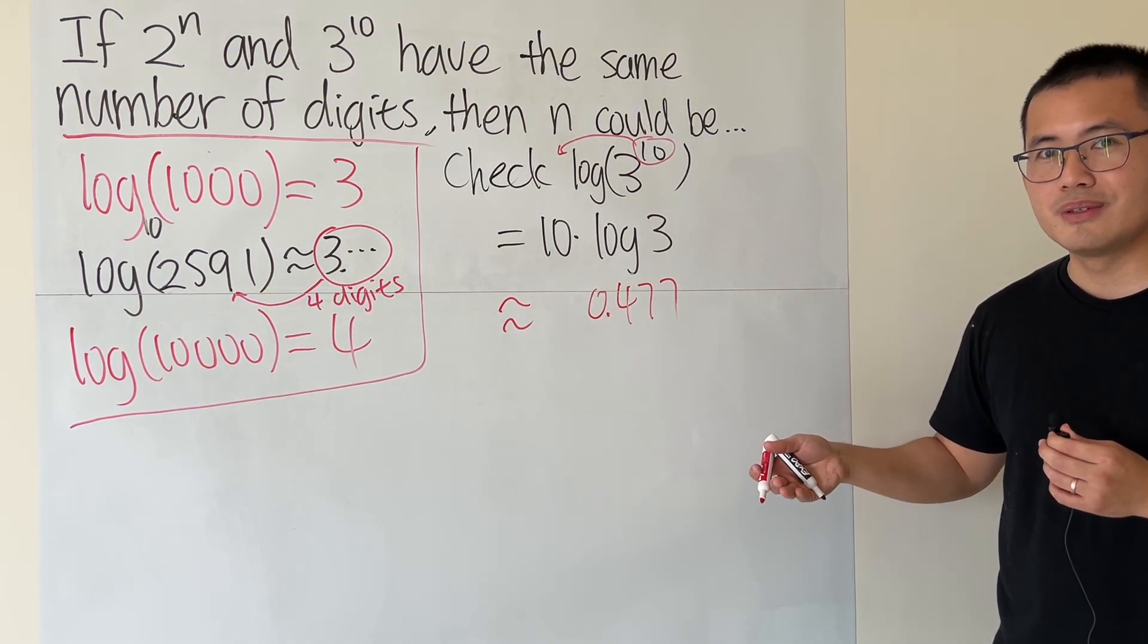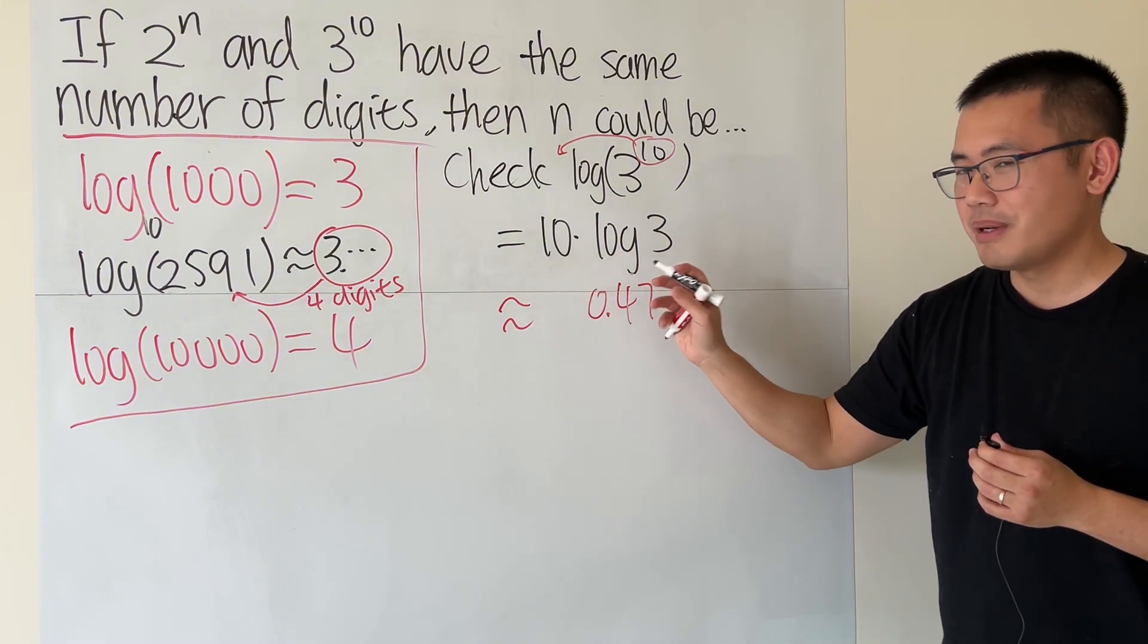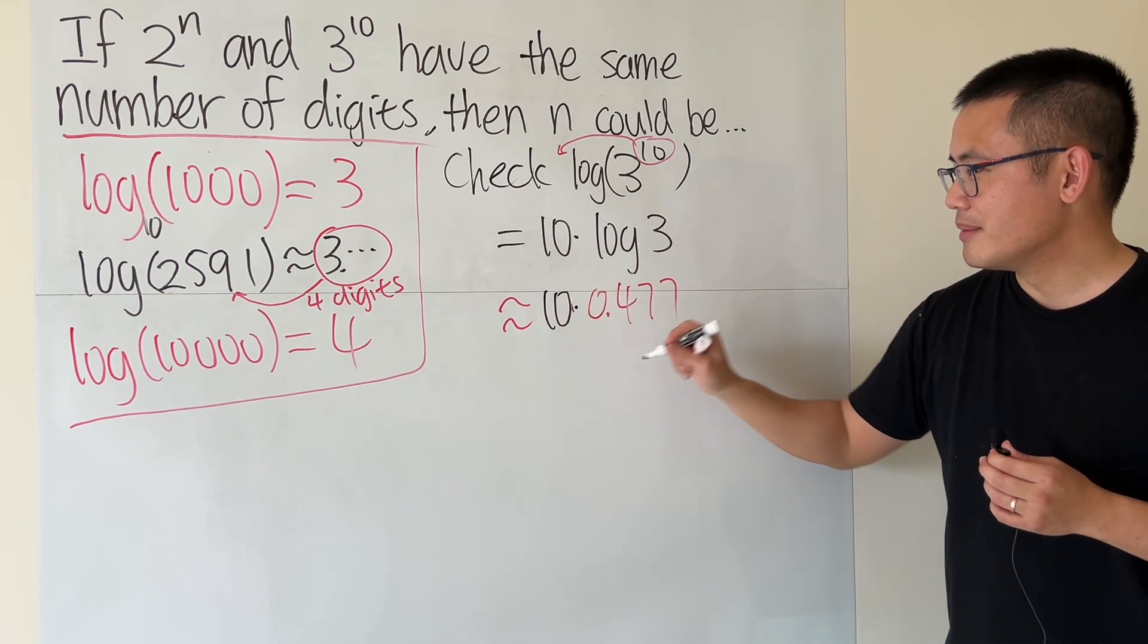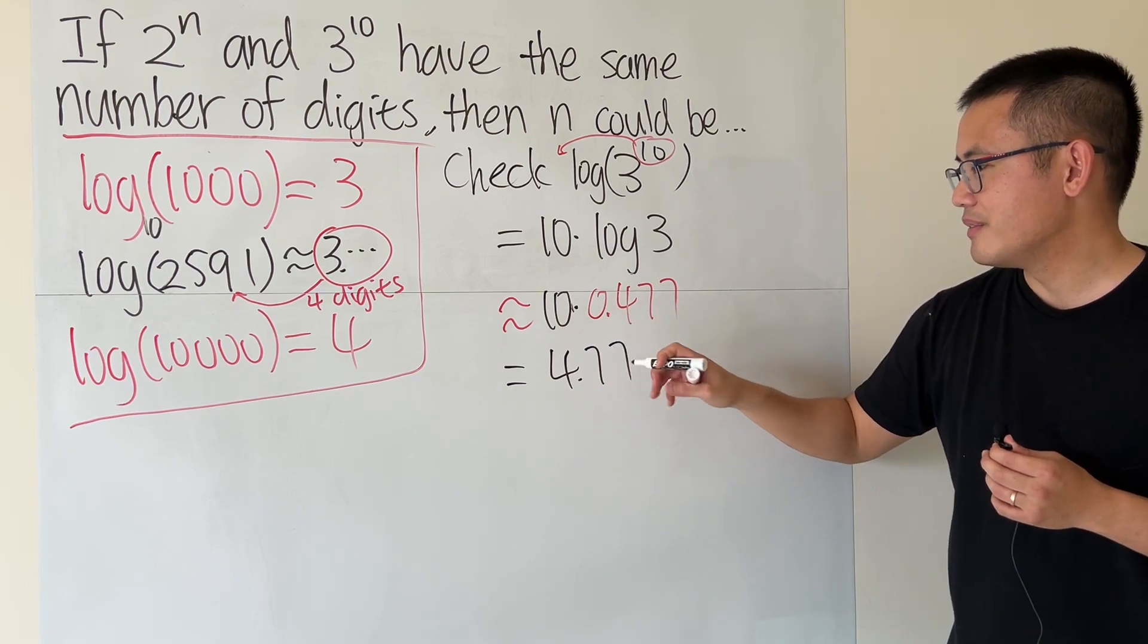And then, anyway, let's just continue from here. So do 10 times that. So if you do 10 times this, this will give us 4.77 something.